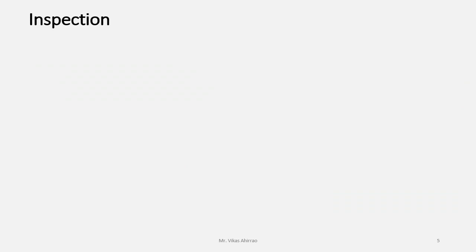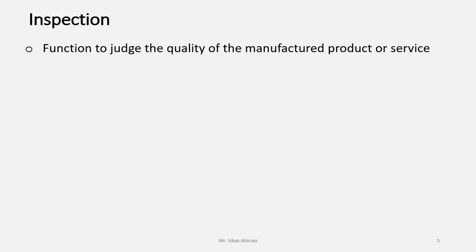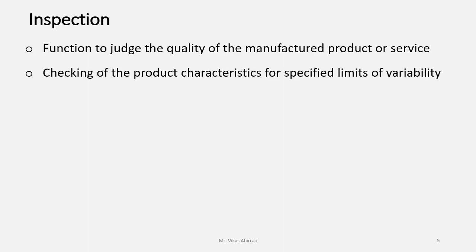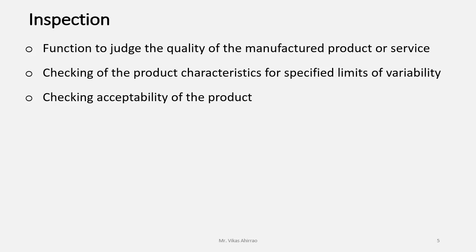In industries, inspection plays an important role. It can be stated as the function to judge the quality of the manufactured product or service, and the checking of product characteristics for the specified limits of variability. It may also include checking of the quality of raw materials.